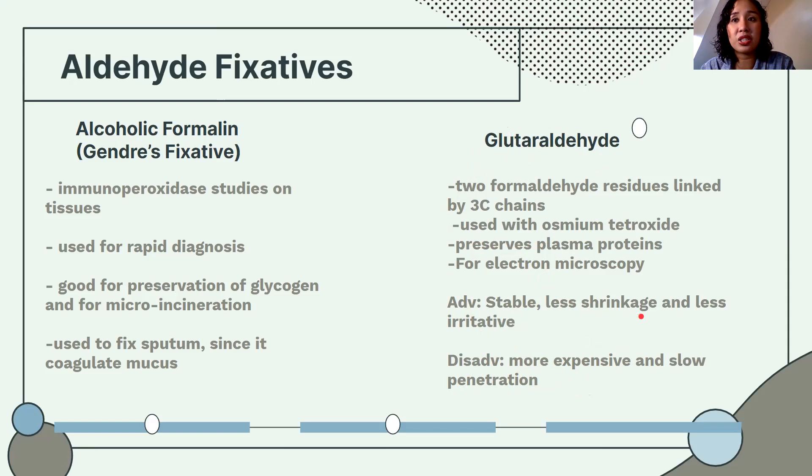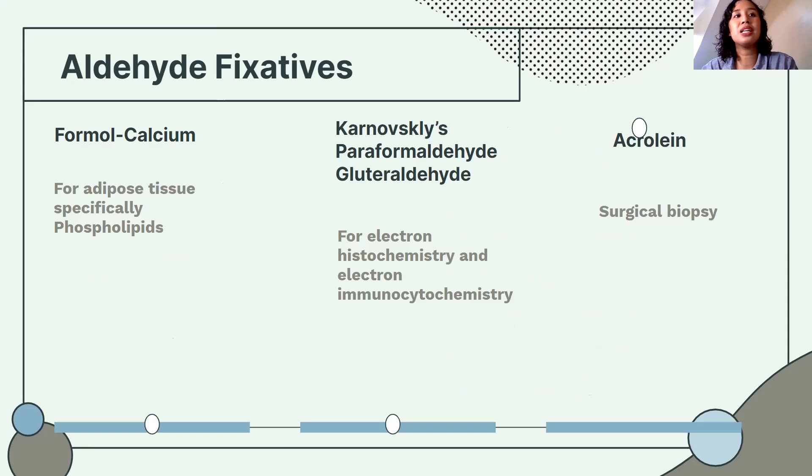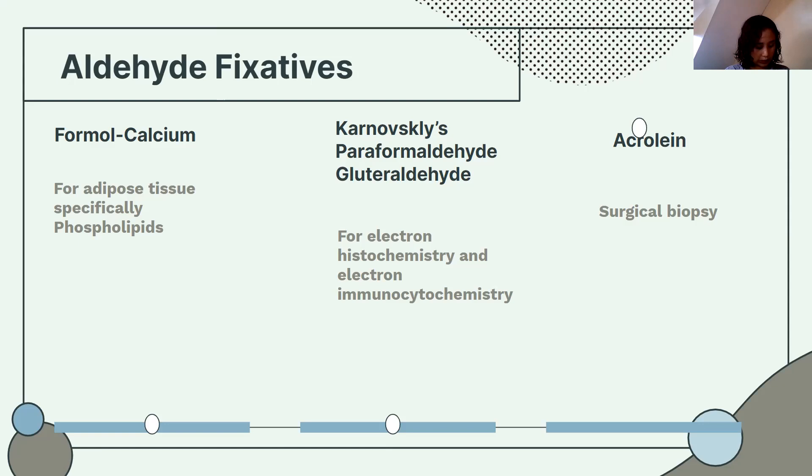Formal calcium, also known as Baker's fixative, is used specifically for adipose tissue — particularly phospholipids. Related fixatives include acrolein and Karnovsky's fixative.